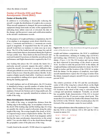Center of Gravity (CG) and Mean Aerodynamic Cord (MAC): In addition to overloading or reducing the aircraft's weight, the distribution of weight is also a concern. When aircraft equipment is changed, the person making the change must make an entry on the equipment list indicating items added, removed, or relocated, the date of the change, and the person's name and certification number in the aircraft's maintenance records. For weight and balance computations, the CG is an imaginary point about which nose-heavy moments and tail-heavy moments are exactly equal in magnitude. If suspended from the CG point, the aircraft would have no tendency to rotate nose-up or nose-down. The CG limits are the most forward and rearward loaded CG positions at which the aircraft meets the performance and flight characteristics required by the FAA. Any loading that places the CG outside these limits seriously impairs the pilot's ability to control the aircraft.